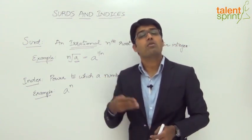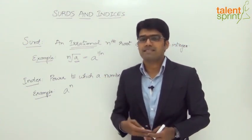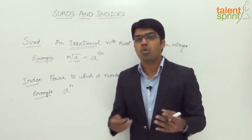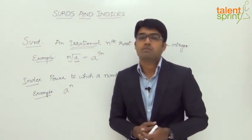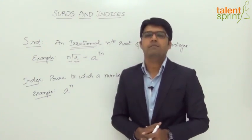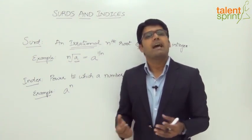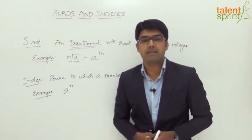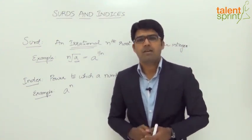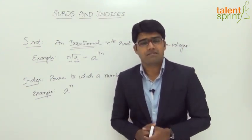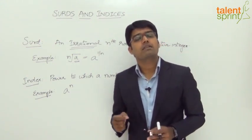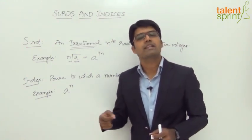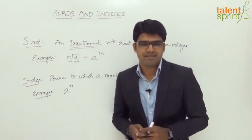For example, square root of 16 is not a surd, since square root of 16 can be simplified as 4, which is a rational number. But square root of 15 will be a surd, as it cannot be simplified and results in an irrational number — a non-terminating and non-recurring number. Simply remember: when we cannot remove the root symbol — square root, cube root, and so on — then it becomes a surd.